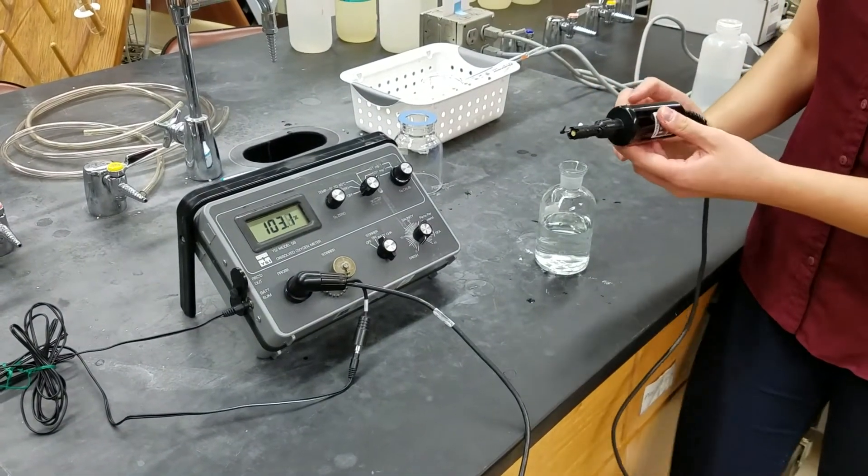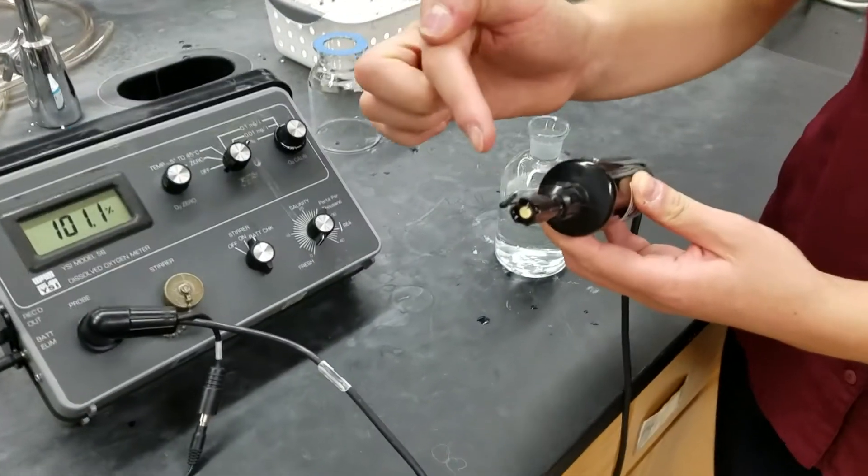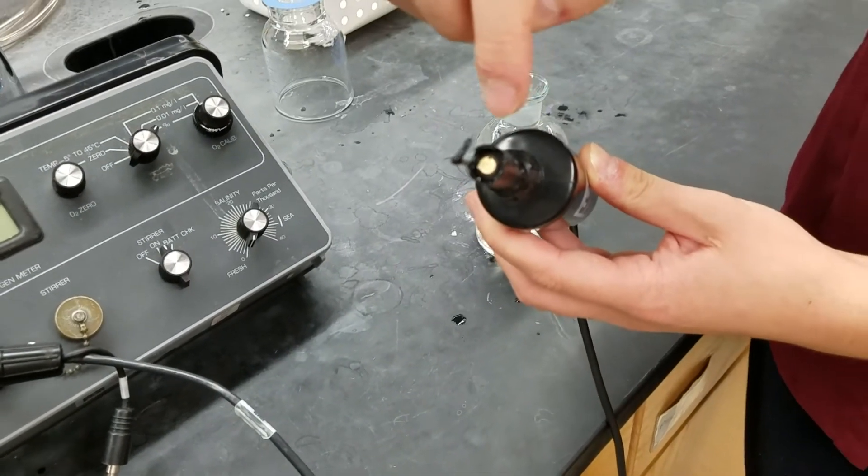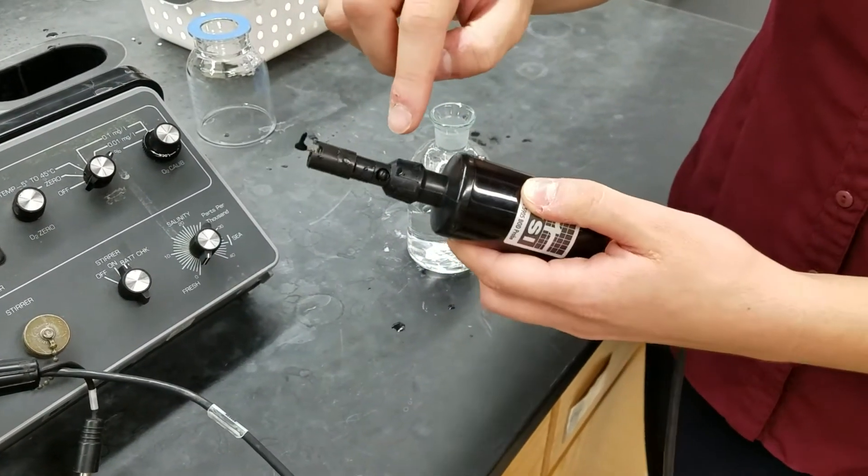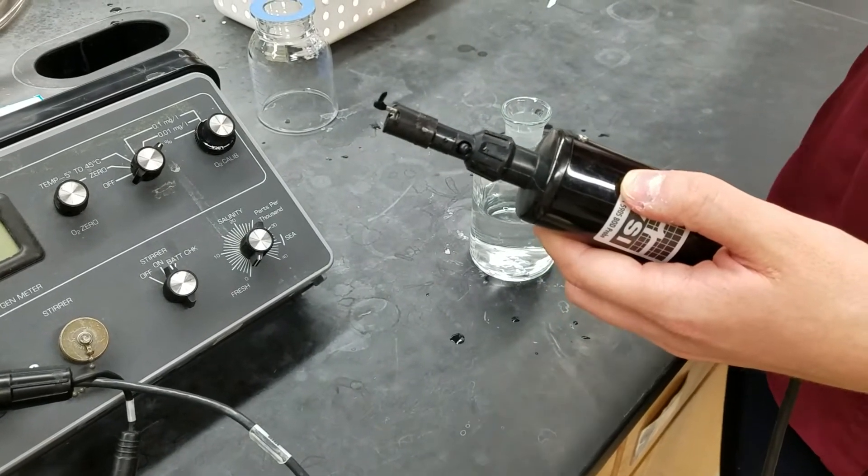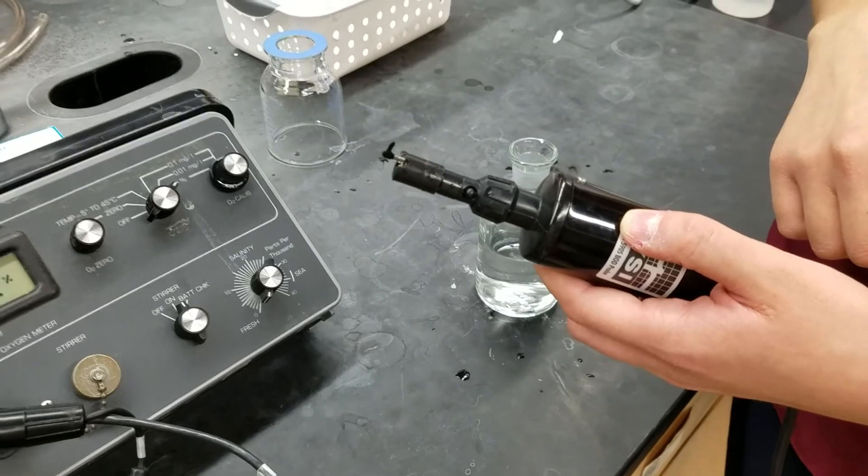And then if you look here, this little black paddle here, that is the stirrer, and then this is the oxygen probe here, and then this little bubble there, that's the temperature probe. So we can measure dissolved oxygen and temperature with the same instrument.